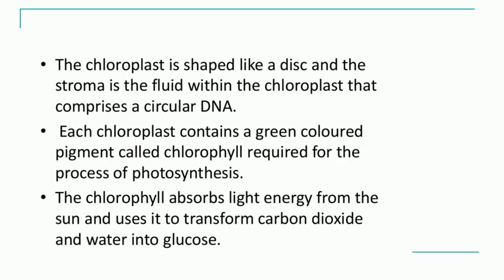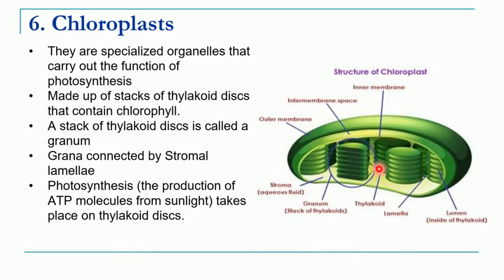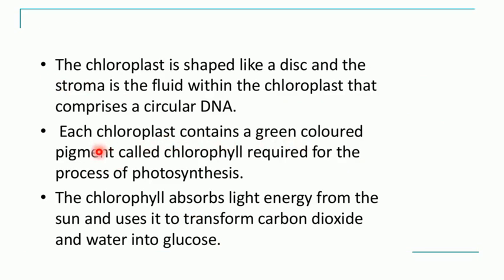In short, the chloroplast is shaped like a disc and it has a liquid part inside called stroma. You have the thylakoid disc, many thylakoid discs form a pile called granum, and many such grana are connected with a lamella-like structure called stromal lamella. Each chloroplast contains the green-colored pigment called chlorophyll, which is required for photosynthesis. The chlorophyll pigment absorbs sunlight and uses it to transform carbon dioxide and water into glucose, and during this process oxygen is liberated.